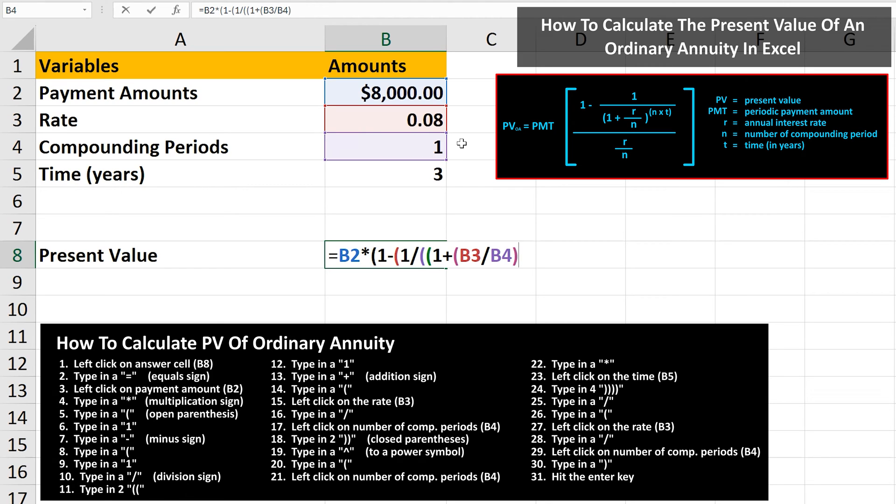Then we type in two closed parenthesis. Next, we type in a to the power symbol, or caret sign, which is shift 6 on the keyboard. And then we type in another open parenthesis. Now we need to left click on the number of compounding periods, cell B4. Then type in a multiplication sign. Next, we left click on the time, cell B5.